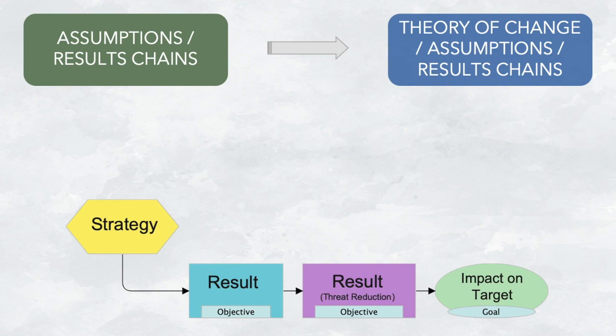An important motivation behind this edition is that the term theory of change is widely used in evaluation literature. By using it in version 4.0, the Conservation Standards community can more seamlessly communicate with a wider conservation community. In summary, we will not lose assumptions or results chains, but we now use theory of change, which more easily translates to other communities and fields.